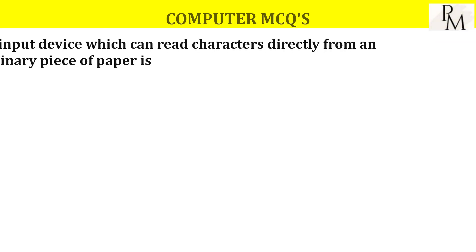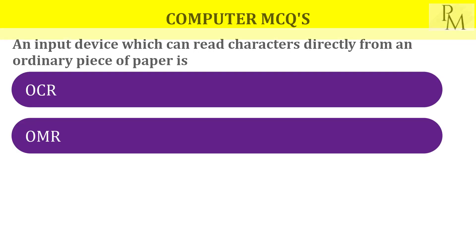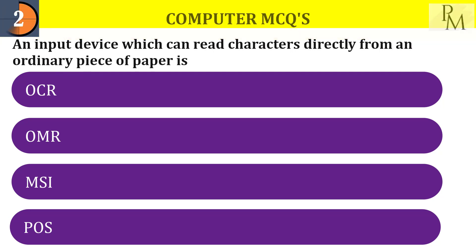An input device which can read characters directly from an ordinary piece of paper is? Try to find the answer — the device that reads characters directly from an ordinary piece of paper is OCR.